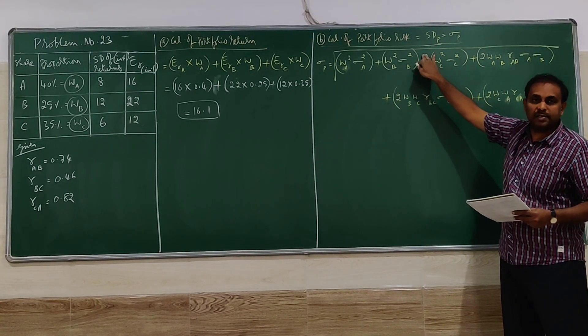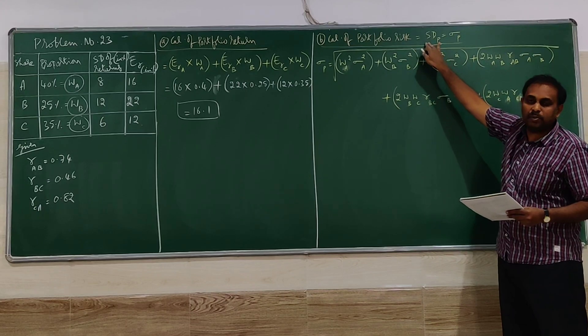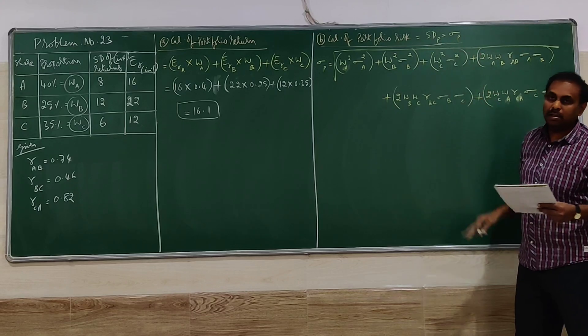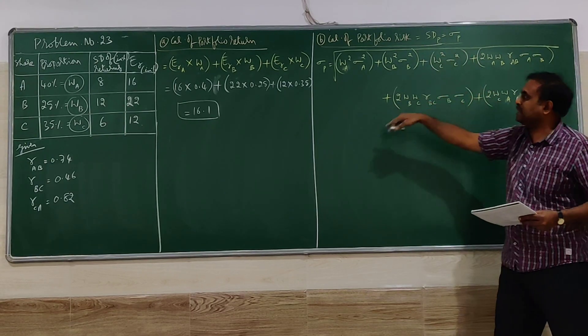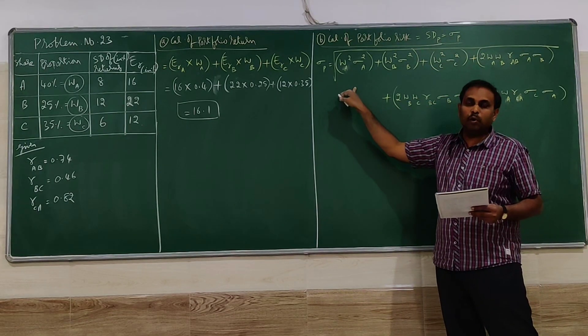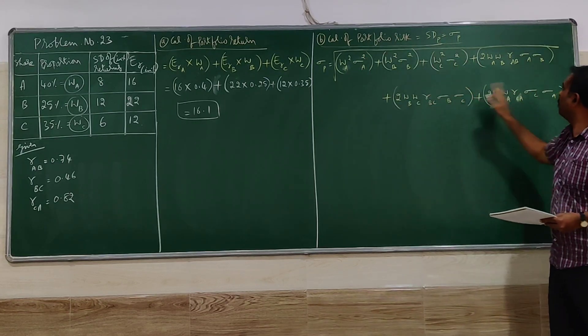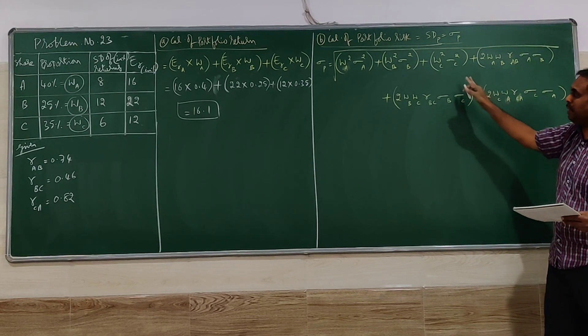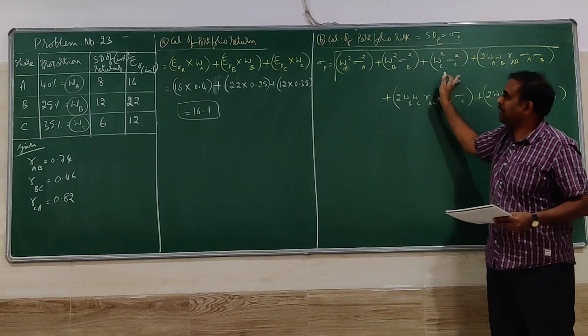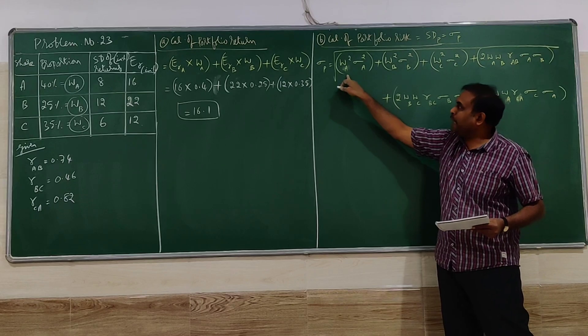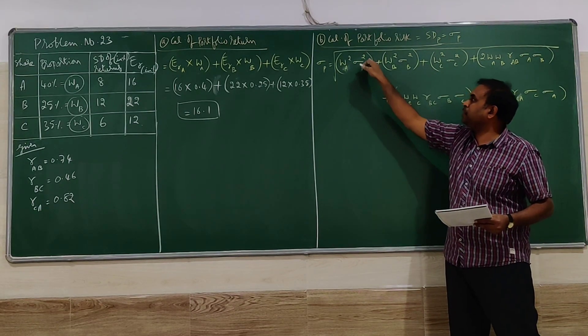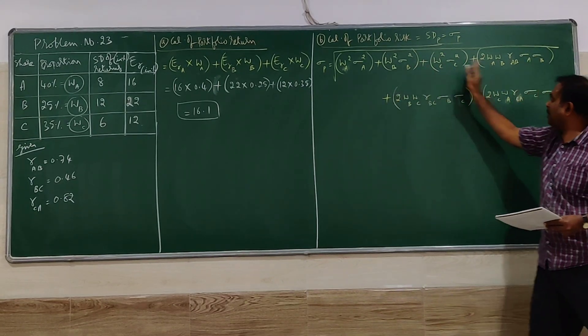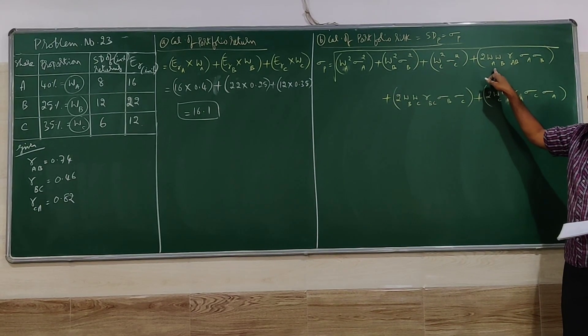Calculation of portfolio risk. Risk is measured in terms of standard deviation. Standard deviation of P, the symbol is given. Here we have to be more careful. Square root of the whole thing. Even for this combination only, square root is there. So three combinations: weight of A squared, standard deviation of A squared. Like that for all three, plus, plus, plus. This combination you have to be more careful.